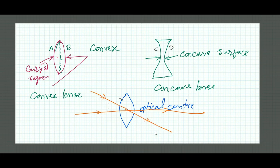If it passes like this, it will pass through without any deviation from any direction. So this is the characteristic of the optical center.